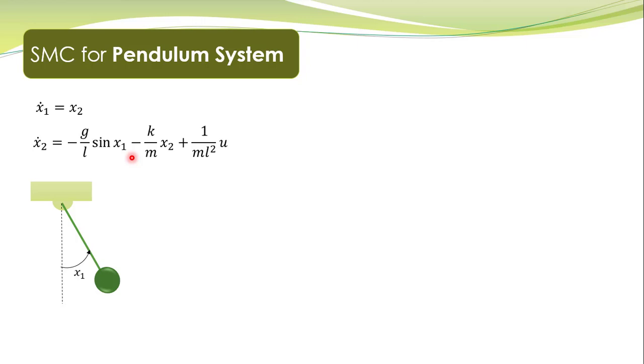Do not confuse this g with that particular g. This g is the gravitational constant. Furthermore, we assume that these parameters are uncertain, not exactly known, but we know some bound on these parameters. The mass of the pendulum m can vary between this lower limit and upper limit.